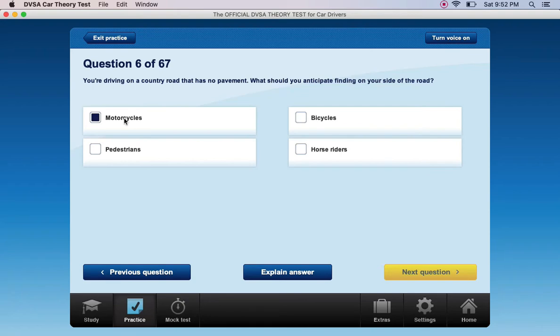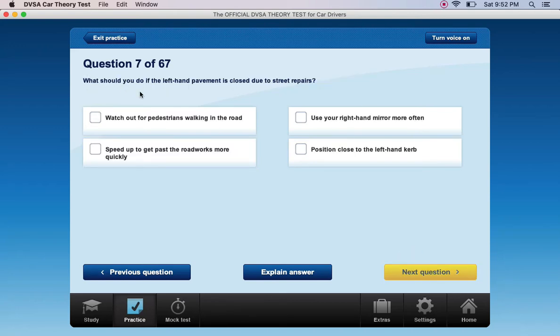You're driving on a country road that has no pavement. What should you anticipate finding on your side of the road? Motorcycles, bicycles, pedestrians, or horse riders.